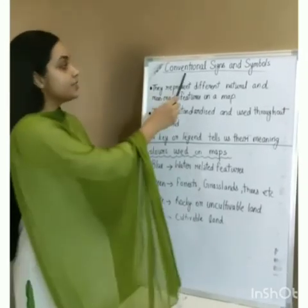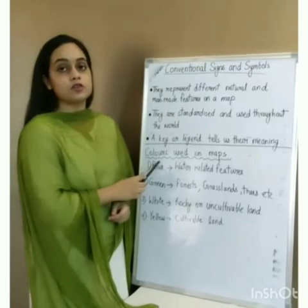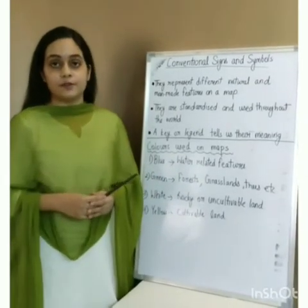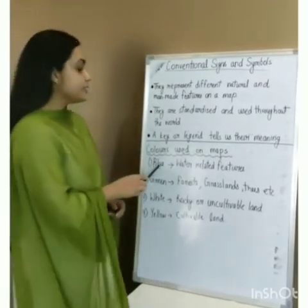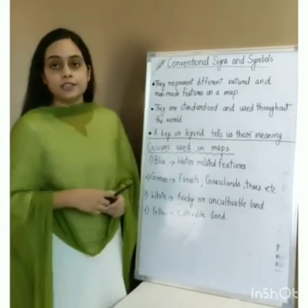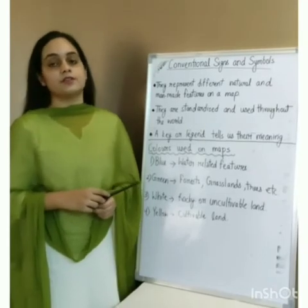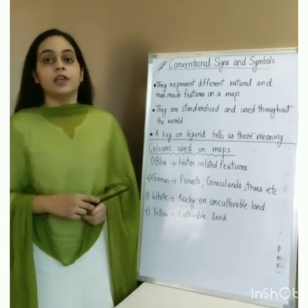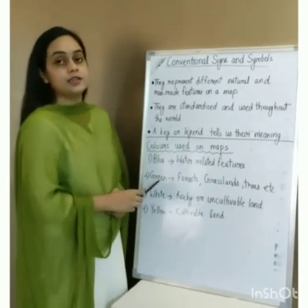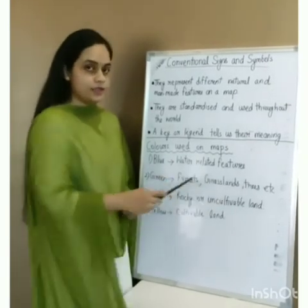Besides conventional signs and symbols, certain colours are also used on a map with definite meanings. The first is blue colour, which shows water-related features — oceans, lakes, and rivers are represented with blue. Green colour represents forests, grasslands, and trees.